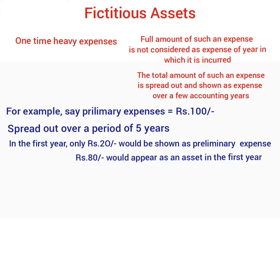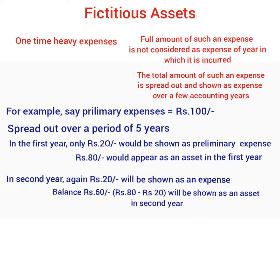During the second year, again Rs 20 will be considered as preliminary expenses and the balance of Rs 60 would be shown as an asset in the second year, and so on and so forth. This Rs 60, shown in the balance sheet of the second year as an asset, is also an example of a fictitious asset.